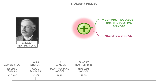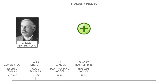At this point, Rutherford was already pretty close to how we currently understand the structure of the atom, but his model had one important flaw. Namely, there didn't seem to be anything stopping this cloud of negative electrons from rushing in towards the positive nucleus, meaning that the atom should just automatically collapse — which we know it doesn't.